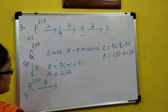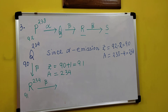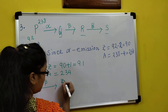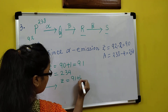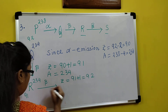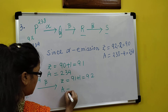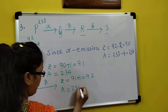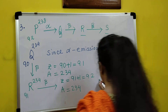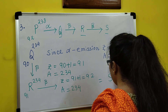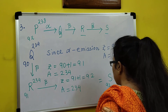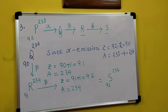Now again a beta emission gives S. Beta emission means Z will again be equal to 91 plus 1, which is 92. And mass number remains 234. So S will be (234, 92). These are the answers. Like that you need to solve these things in exam also. Please do copy because I will not give the solution in the PDF.